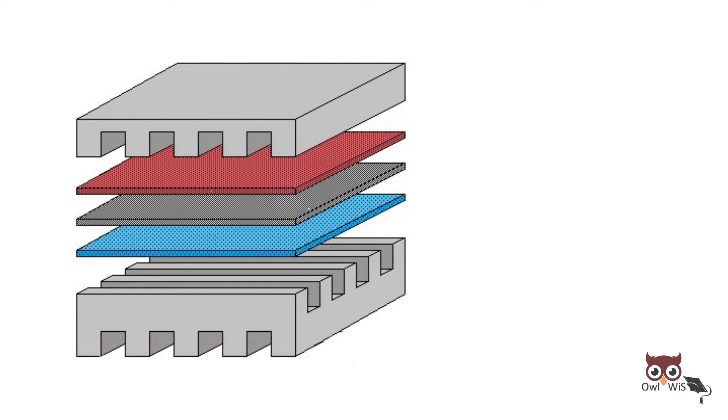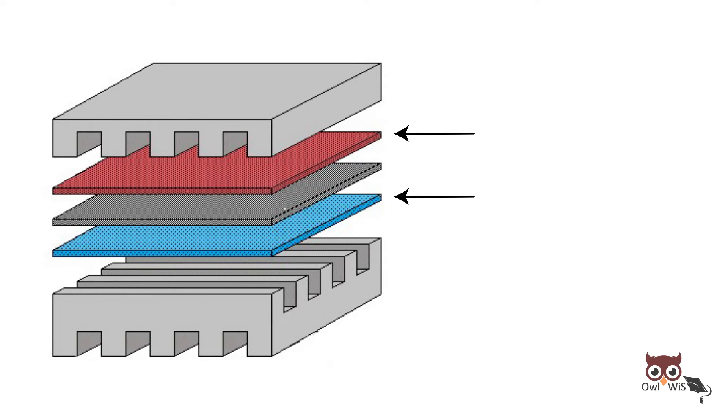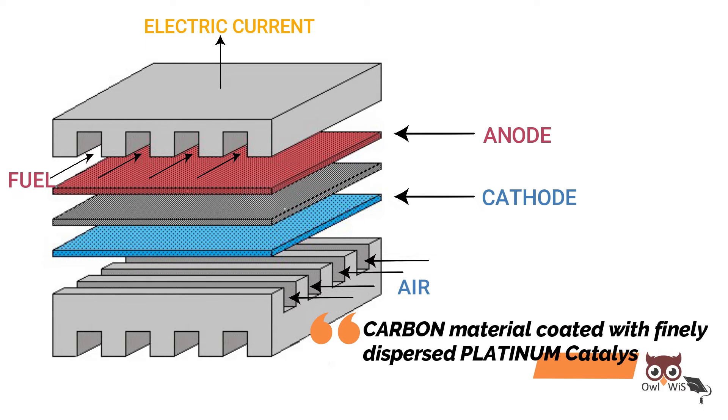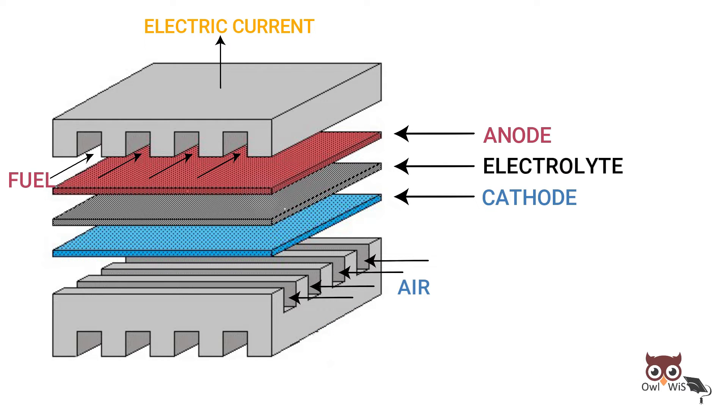A phosphoric acid fuel cell is composed of a pair of porous electrodes, the fuel electrode and air electrode, formed from mainly carbon material coated with a finely dispersed platinum catalyst between which is placed an electrolyte layer.